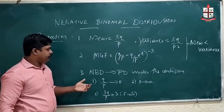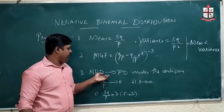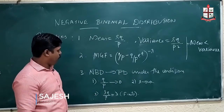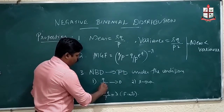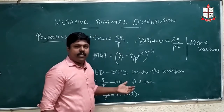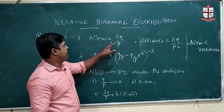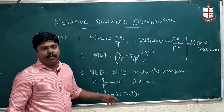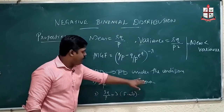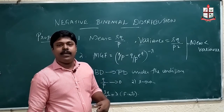The negative binomial distribution will tend to a Poisson distribution under certain conditions. First, q/p tends to 0. Second, r tends to infinity — that is, the number of successes tends to infinity. Third, rq/p — which is the mean — should be a finite quantity lambda. If these conditions are satisfied, the negative binomial distribution tends to Poisson distribution with parameter lambda.